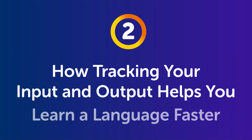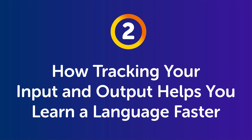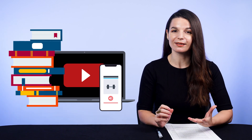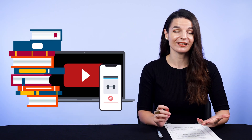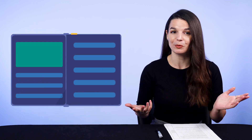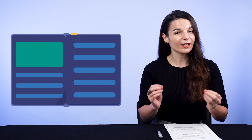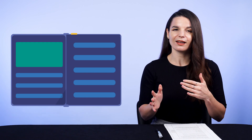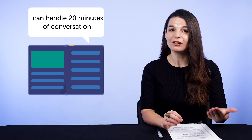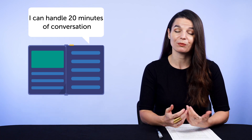Part 2: How tracking your input and output helps you learn a language faster. If you take a look around, most learners do a ton of input with studying — they read textbooks, they watch videos on YouTube, they spend hours on apps. But they have no measurable results or return on their time invested. If someone told you they've read 200 pages of a textbook, which is a lot of input, can they place a specific number on their results? Can they say, 'I learned 1000 words,' or 'I can handle 20 minutes of conversation as a result of reading 200 pages?' Probably not.